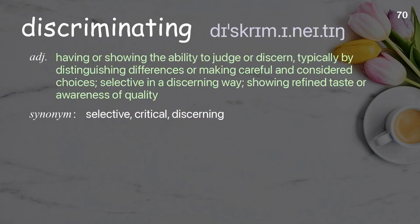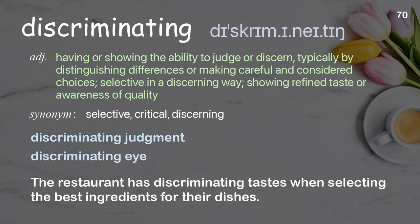Discriminating: having or showing the ability to judge or discern, typically by distinguishing differences or making careful and considered choices; selective in a discerning way, showing refined taste or awareness of quality. Examples: discriminating judgment, discriminating eye. The restaurant has discriminating tastes when selecting the best ingredients for their dishes.